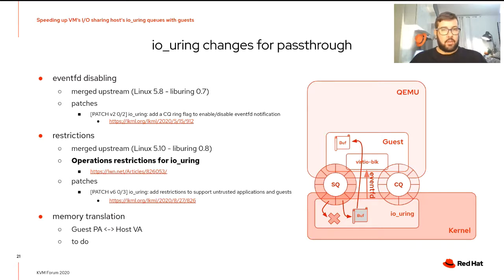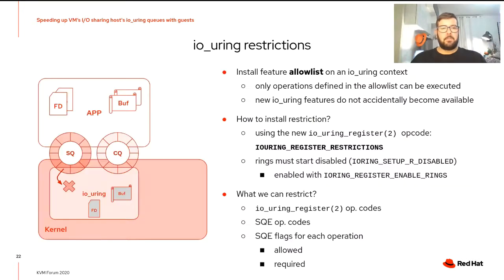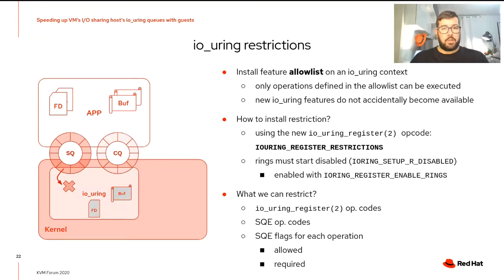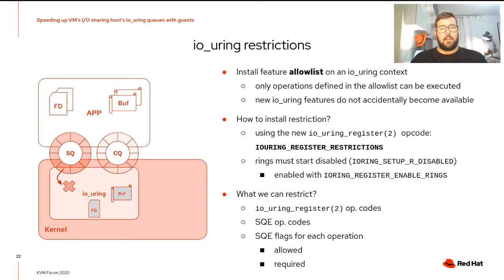The second and most important changes were a way to restrict the operations allowed in an IOUring context, to safely share the rings with untrusted processes or guests. There's a good article on LWN.net about this feature. The last change concerned memory translation, because IOUring expects host virtual addresses, but the driver in the guest uses guest physical addresses, so we need a mechanism to register the memory mapping allowing IOUring to translate these addresses. Unfortunately, this feature is not yet available. We had the possibility to restrict the IOUring queues to share them with the guest — for example, we don't want to allow a guest to use all file descriptors opened by QEMU, or to do any kind of operations. This prevents new IOUring features from accidentally becoming available to the guest.